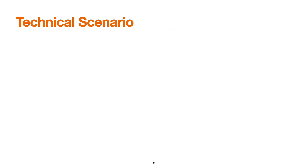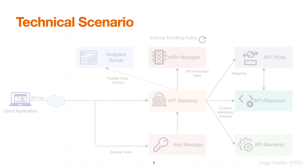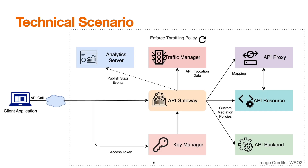Now let's look at the technical scenario. When an API call invocation is made which is protected by the API Gateway, there are a series of steps executed in chronological order. The API Gateway serves as an entry point for API requests managed by WSO2 API Manager. When a call is received, it first checks for an API proxy, then checks whether the API resource exists.